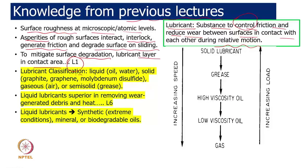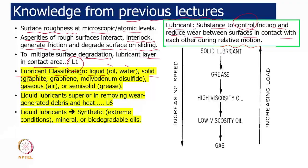Lubricants can be classified as liquid lubricants such as oil or water, solid lubricants with low shear strength like graphite, graphene, or molybdenum disulfide, gaseous lubricants useful for high-speed applications, or semi-solid greases which are also very useful. This lecture will cover liquid lubricants and grease in more detail.